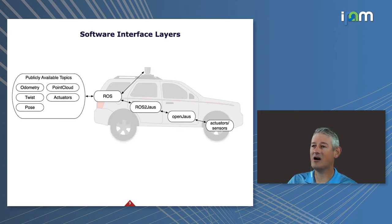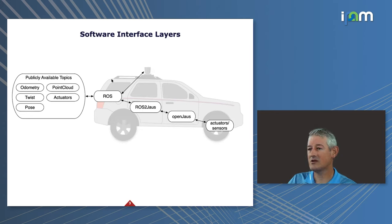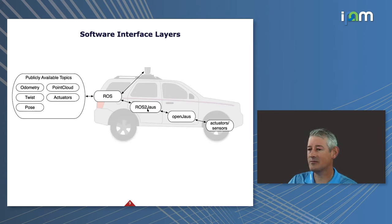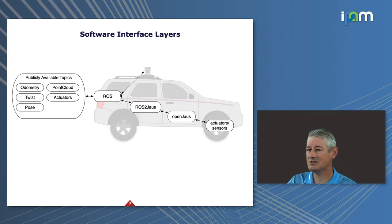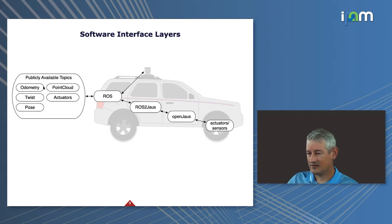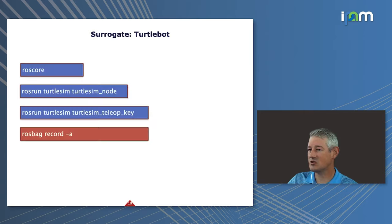Reviewing the software interface layers: the most important ones represent actual integration with the Robot Operating System, or ROS. Below that in the hierarchy is where you typically obtain data from the onboard system — in our carts they call it Open JAWS — but you might go directly from the CAN bus to get information from actuators and sensors. Other sensors provide input directly to ROS, including odometry, point cloud data, and the state of the actuators.